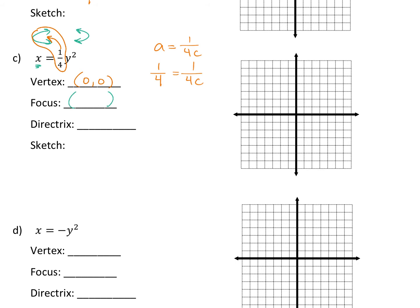So my focus — now here's where it switches. Remember your focus now is (C, 0) instead of (0, C). When the parabola turns, it switches your C. So your focus is going to be at (1, 0). What's your directrix going to be? Now it's going to be a vertical line: x equals negative 1, the opposite of your C value.